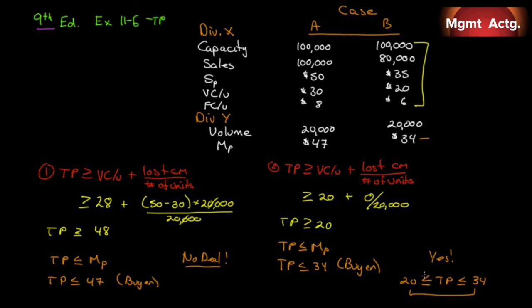A fair split would divide the $14 range by two, suggesting a transfer price of around $27. This benefits both divisions and is in the company's best interest as well.